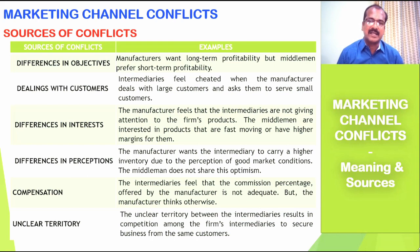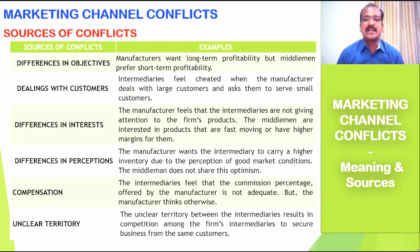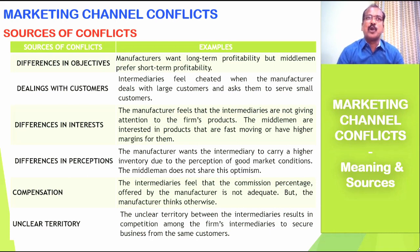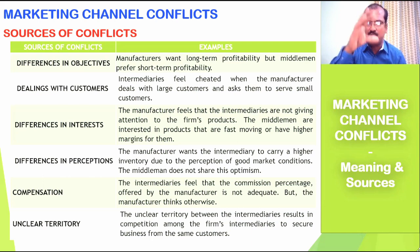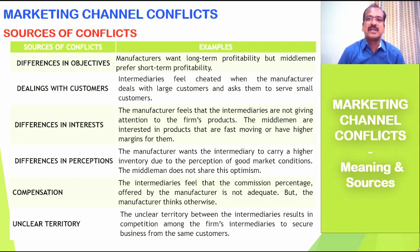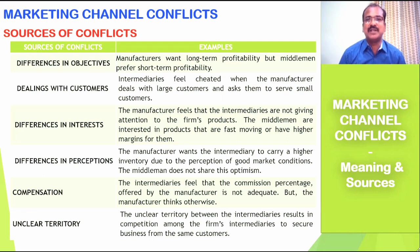The third source is differences in interest. The manufacturer feels that intermediaries are not giving attention to the firm's particular products. Middlemen are interested in products that are fast-moving or have a higher margin. Among ten products marketed by a company, say eight could be fast-moving while the remaining two may not — perhaps because they are in the introductory or declining stage of the product life cycle, or because the market is not performing well for those products in general. These dull-moving products will not be concentrated upon by channel intermediaries since they are looking for short-term profitability.